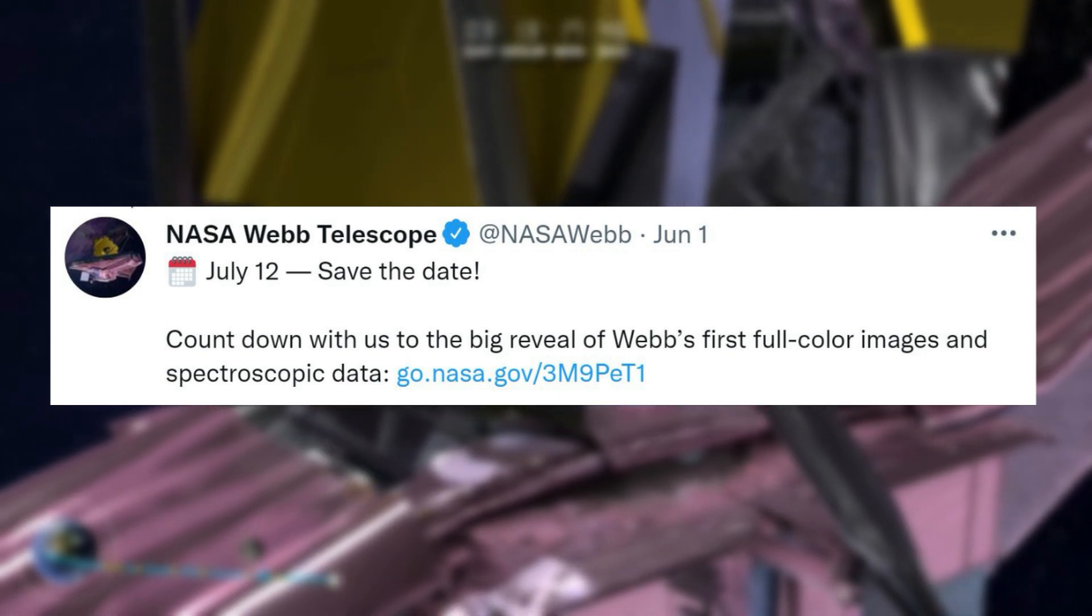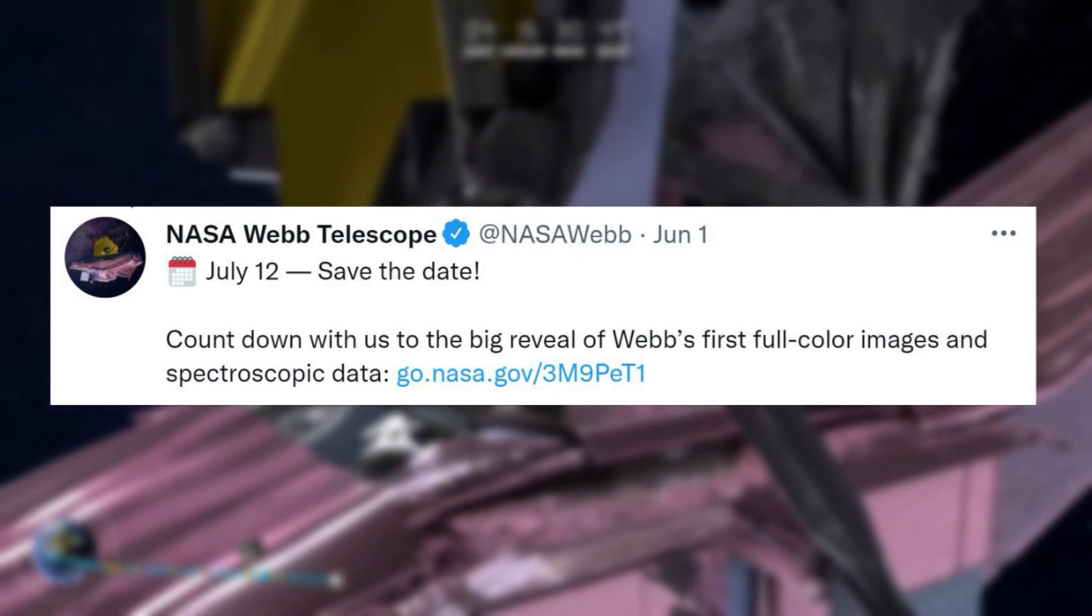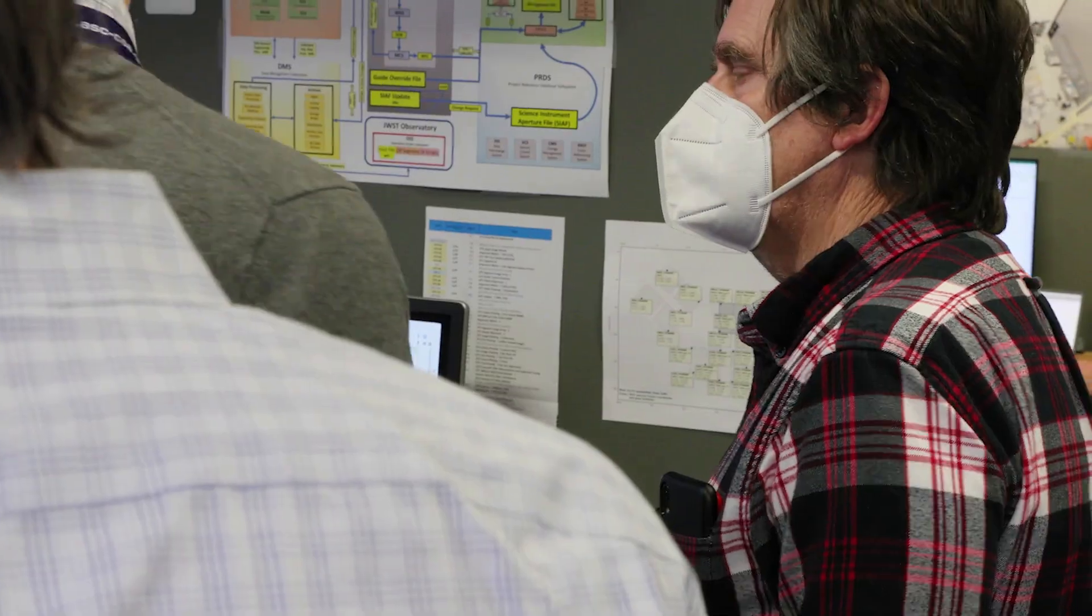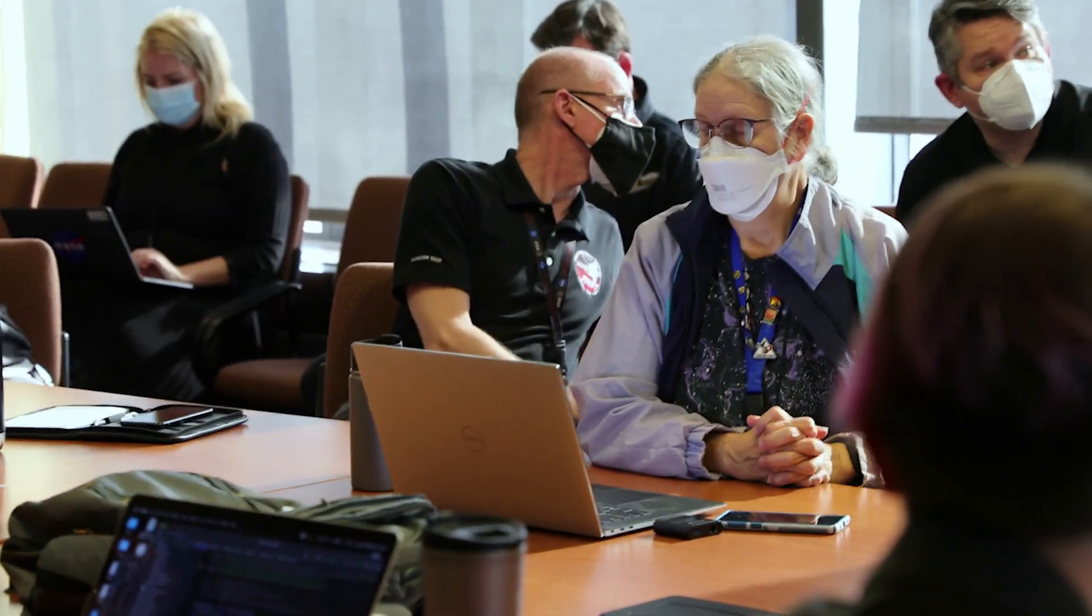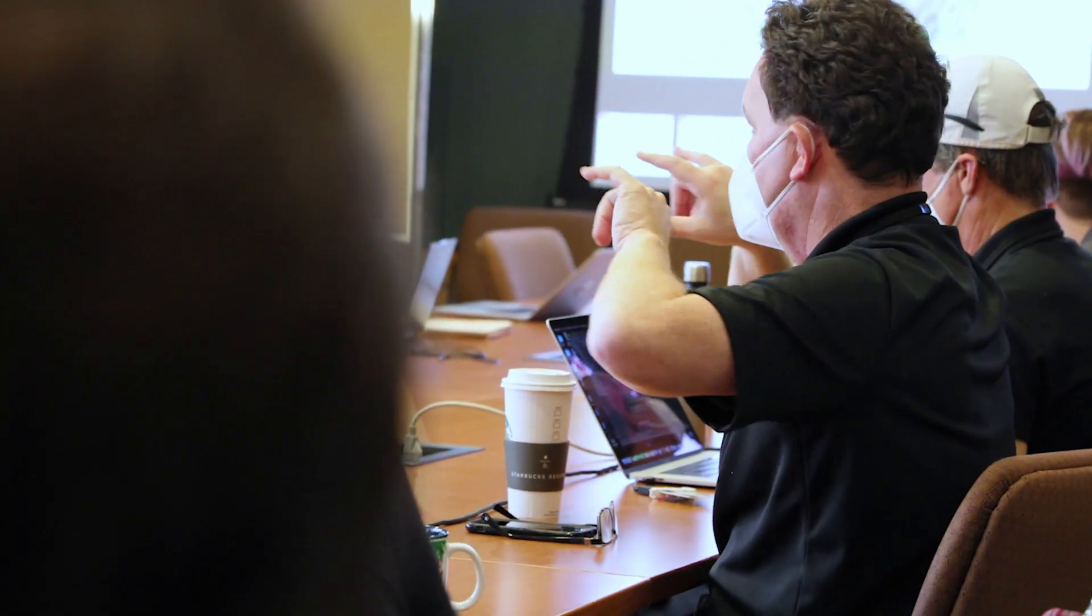Countdown with us to the big reveal of Webb's first full-color images and spectroscopic data. As the largest and most complex observatory ever launched into space, Webb has been going through a six-month period of preparation, before it can begin science work, calibrating its instruments to a space environment, and aligning its mirrors.